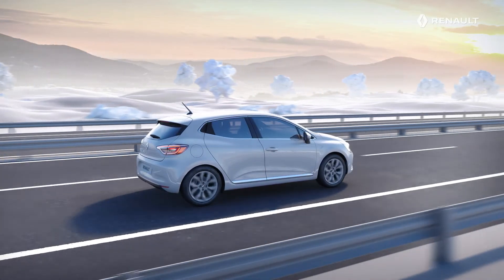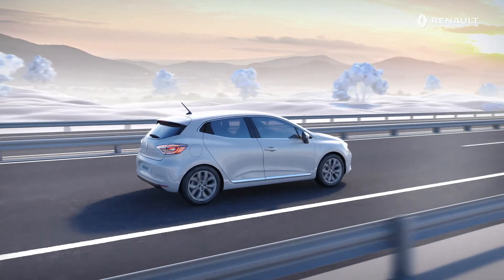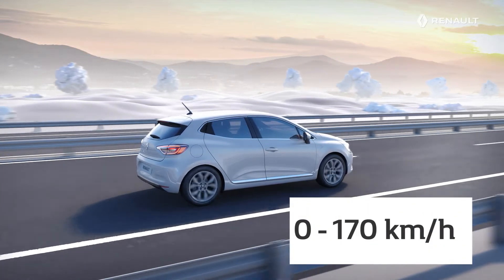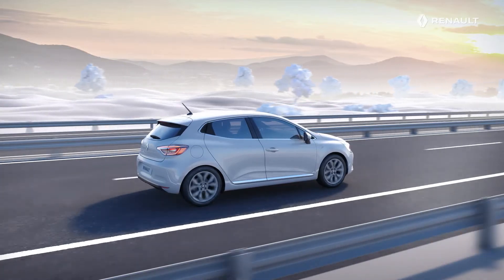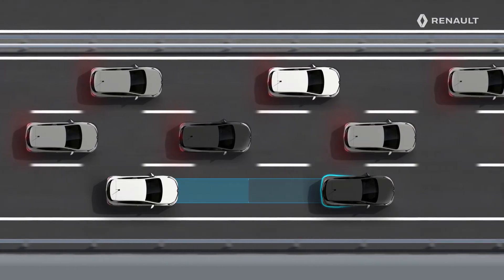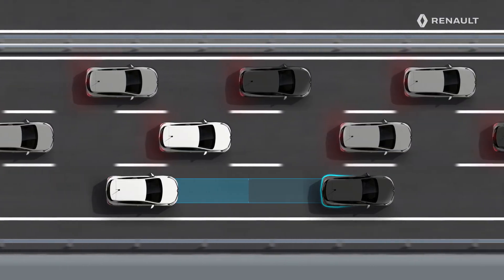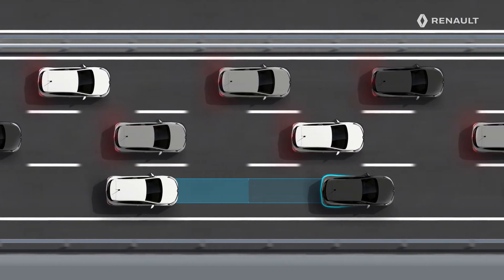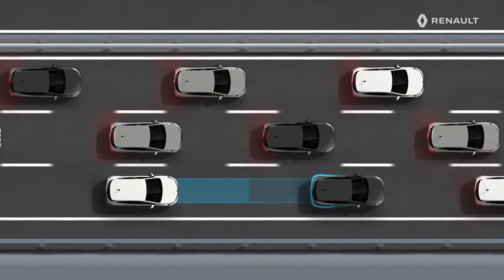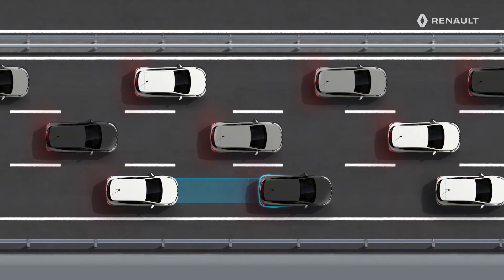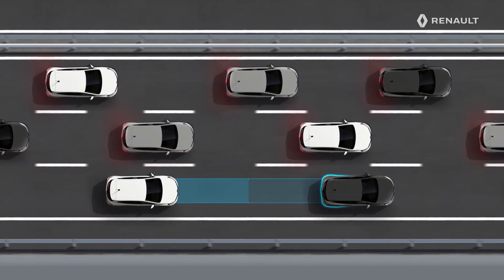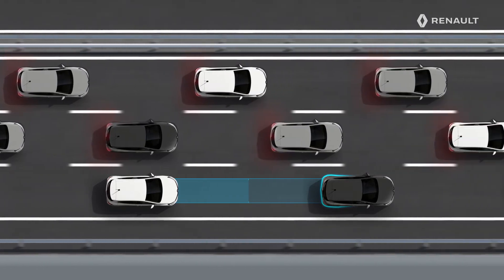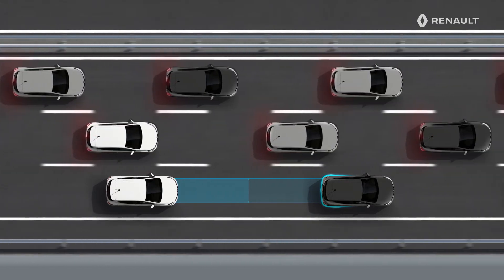With an automatic gearbox, you also have the stop and go function. The adaptive cruise control is then operational between 0 and 105 mph or 170 km/h once activated. With the stop and go adaptive cruise control, you benefit from real assistance when driving in traffic jams. When the vehicle ahead of you slows down and stops before moving off again, your new Renault Clio is able to do the same without any action from you on the pedals.